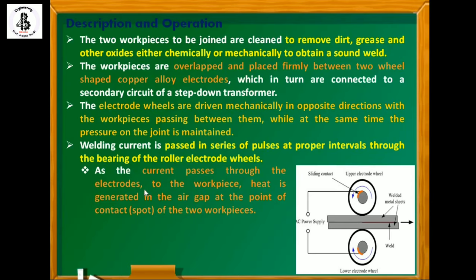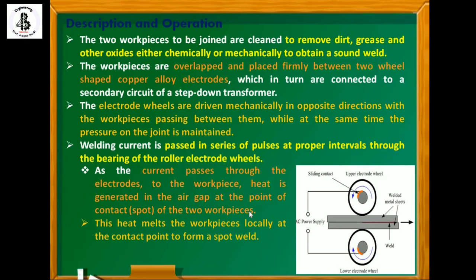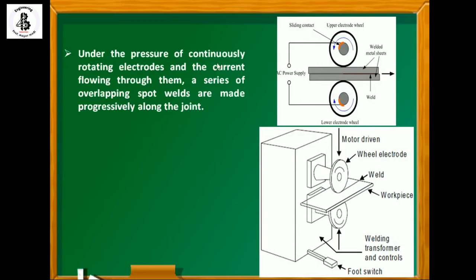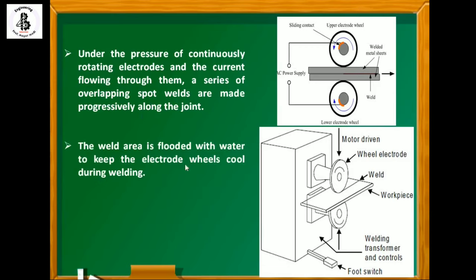As current passes through the electrodes, heat is generated at the air gap at the point of contact between the two workpieces. This heat melts the workpieces locally at the contact point to form a spot weld. Pressure is applied by air spring or hydraulic systems. Under the pressure of the continuously rotating electrodes and current flowing through them, a series of overlapping spot welds are made progressively along the joint. The weld area is flooded with water to keep the electrode wheels cool during welding, though this is not always found in every workshop.